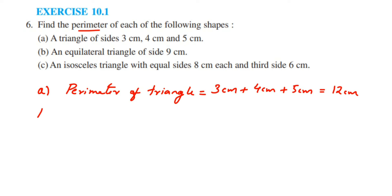Now the second one. They have given it is an equilateral triangle. In equilateral triangle, all the sides will be the same. So they have given only one side. So perimeter will be 9 plus 9 plus 9, which is equal to 27 cm.